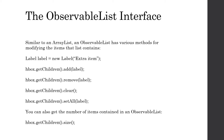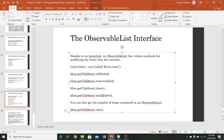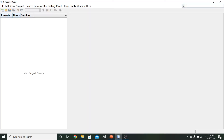You can also clear all items currently in it, use the setAll method to change a particular item, and use the size method to check how many items are inside that ObservableList. For this example, I want to demonstrate a couple of these methods — specifically we'll create an HBox with a couple of items and test out the add, remove, and size behaviors.